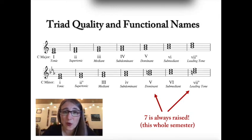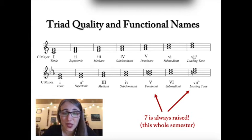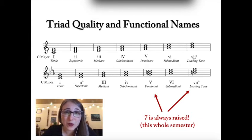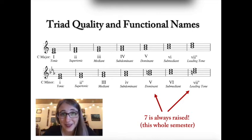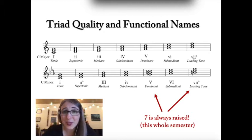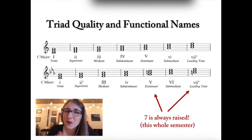Anytime you build a chord on top of a scale degree, it adopts the same functional name. Scale degree 5 is called the dominant — if you build a triad on scale degree 5, it's called a dominant triad. Build a triad on scale degree 1, it's called a tonic triad. So if you've got your scale degrees down, then you've kind of got your Roman numerals down.